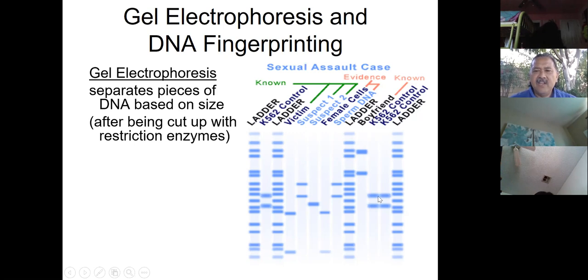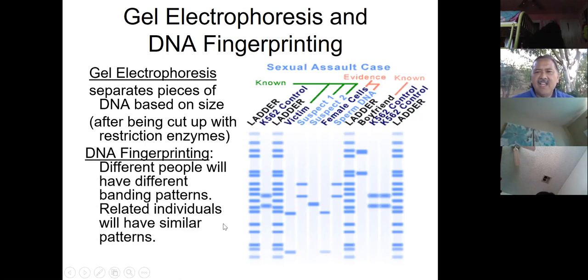So, what we can get from this is that it's suspect one. Was it the boyfriend? No, because the boyfriend's bands are up here and the sperm, which is part of the evidence, over there. Okay. And then here's the, here's some controls and the comparison ladder. So, if you take a look at evidence, you can see that it wasn't the boyfriend and it wasn't suspect two. But the evidence, the sperm evidence right there, the sperm DNA, this was suspect one's DNA on the evidence. So, boom, they got him. Okay. This is called DNA fingerprinting.